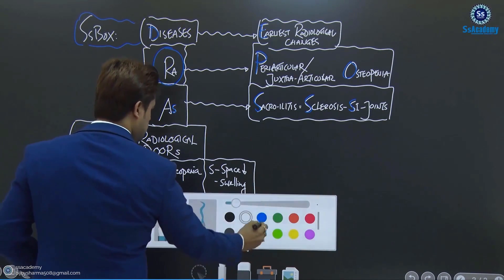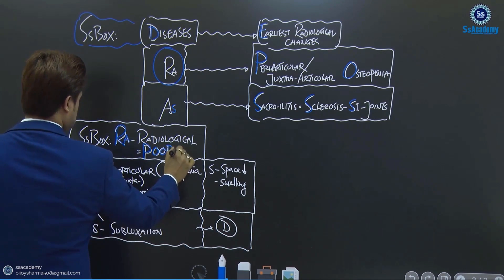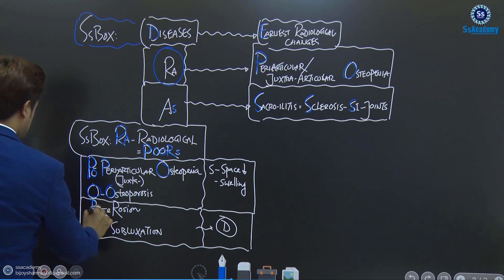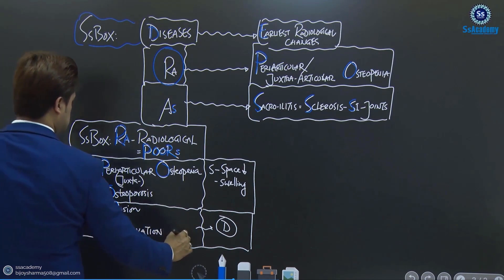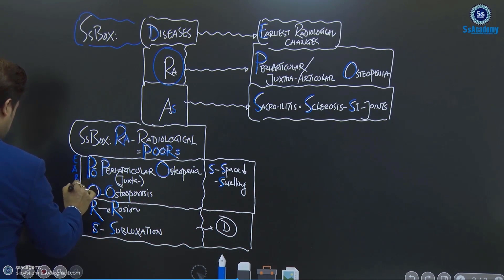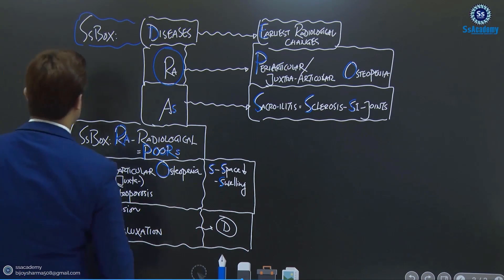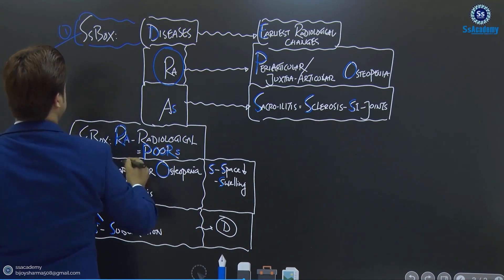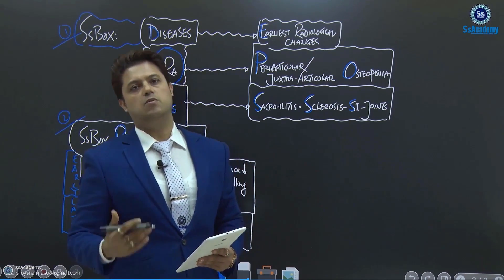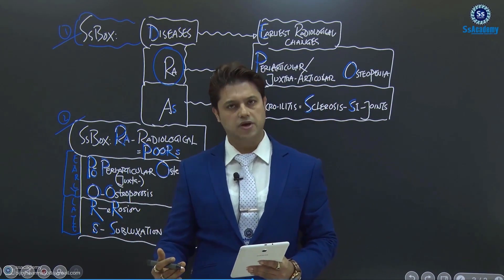So this is very much important. So once again the rheumatoid arthritis radiological changes are the PORS: P for periarticular osteopenia and osteoporosis, R for erosion, S for subluxation in late changes, S for space and S for swelling in early changes. These are the early changes and this is the late change. So this is number one box and there is a number two box — the periarticular osteopenia and osteoporosis, R for erosion, S for space and swelling in early changes, and S for subluxation.